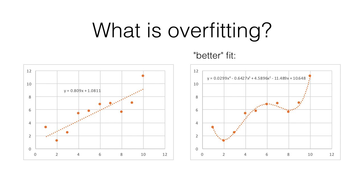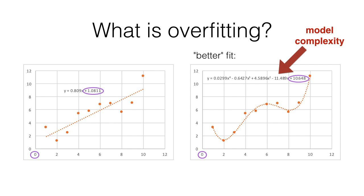The trend line is now closer to each data point, so a measure like mean squared error would get better for these data points. But since we know the function that produced these data, we can see how the more complicated model would perform on newly generated data points. If we saw a data point with an x value of 0, the intercept of the polynomial would predict a y value of more than 10, whereas the linear fit intercept would be much closer to the actual expected value of 0. Remember that the data were generated from a y equals x linear function.